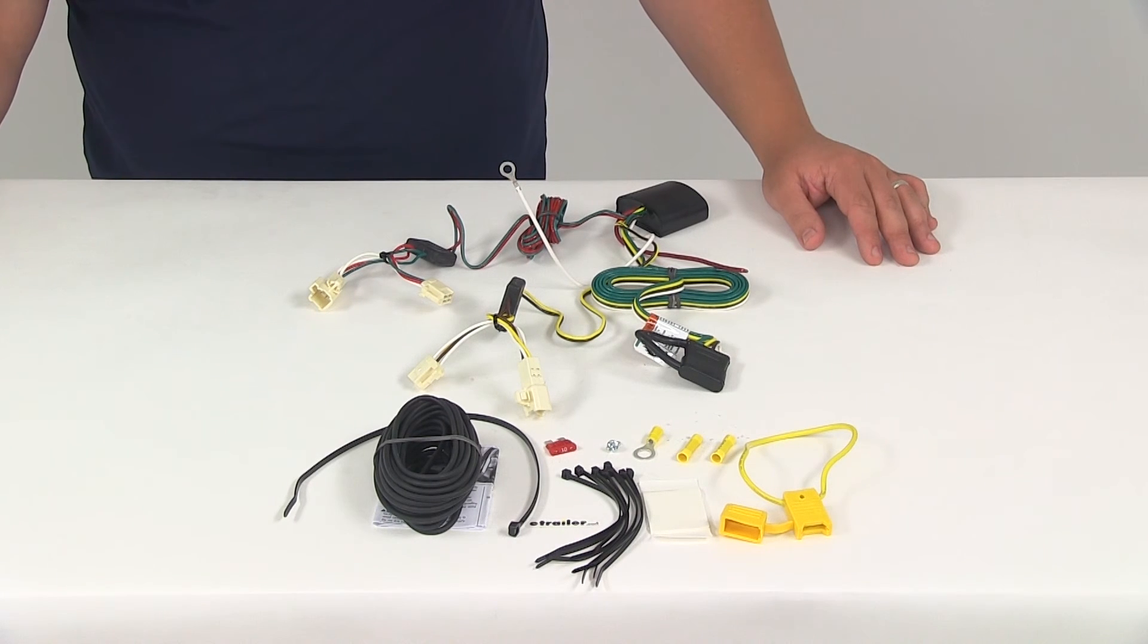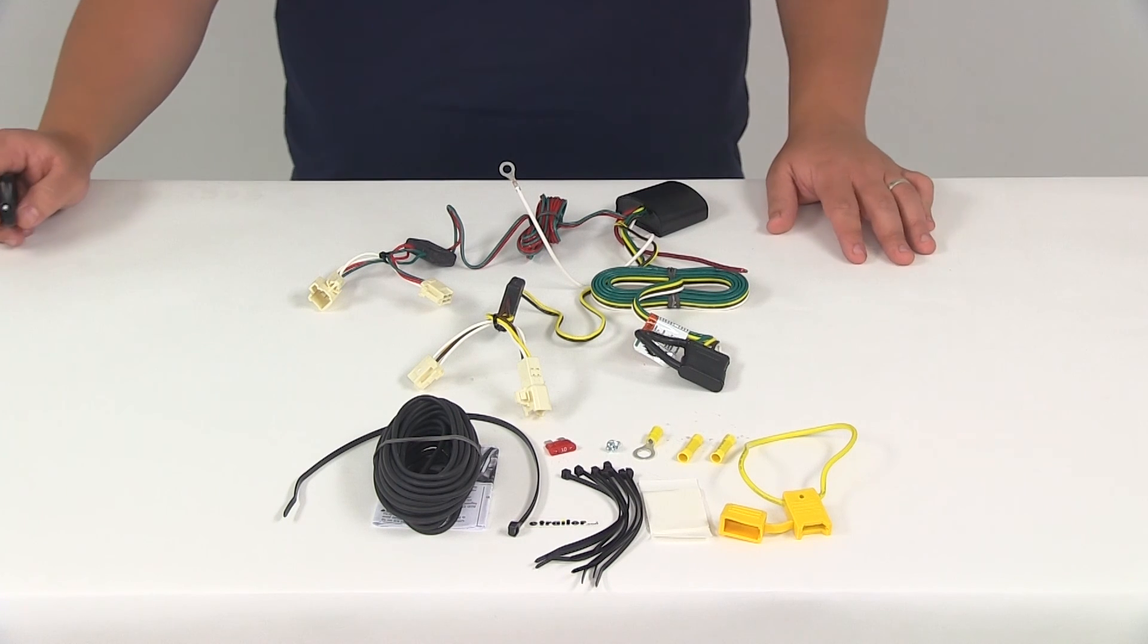That's going to do it for today's review of part number 118482. This is the T1 vehicle wiring harness with the four-pole flat trailer connector.